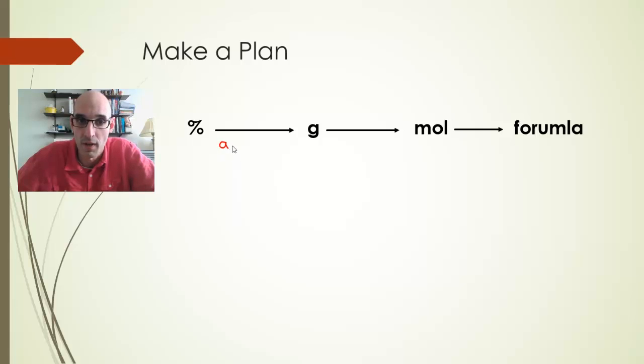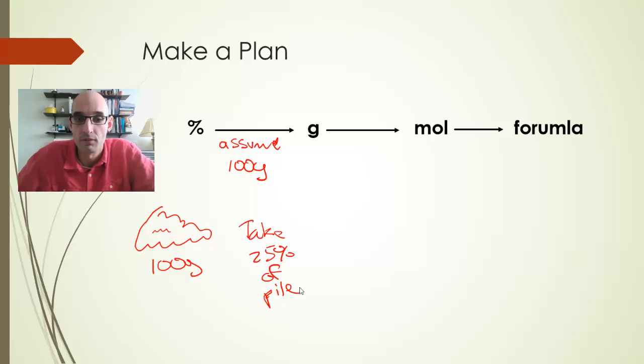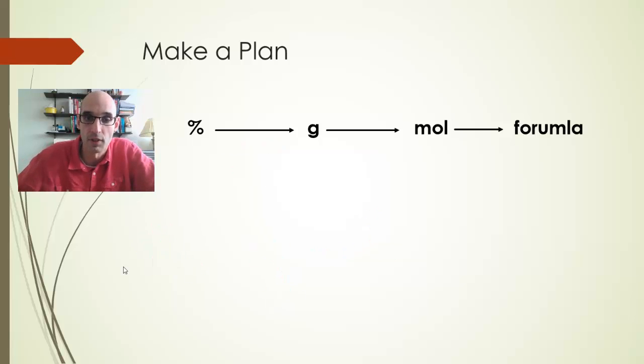We're always going to start with a percentage. That is what's going to be provided by the question. From there, we can work our way through. Each of the next couple of slides will go through each part of this. Each arrow represents a different calculation, but it's all very straightforward, and it's always going to follow this method. So, let's start with percent to grams. We are going to assume 100 grams.